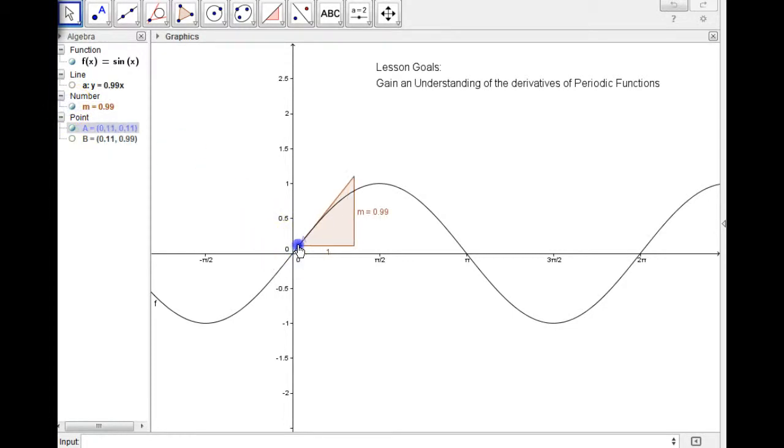So if I move this a value here, you can see that the gradient's quite steep here at 0.94, but as we move to the top the gradient gets less steep, less steep, less steep, until eventually when we're at the top it's got a gradient of 0.